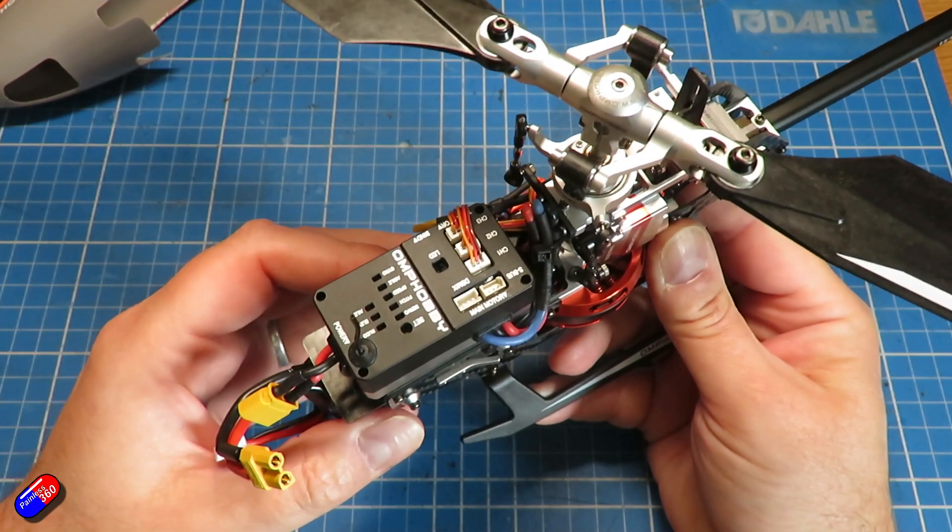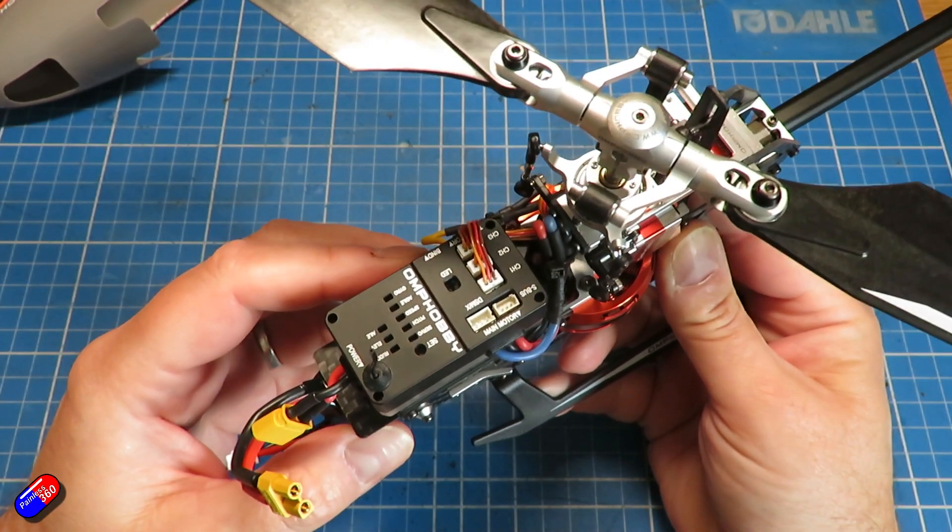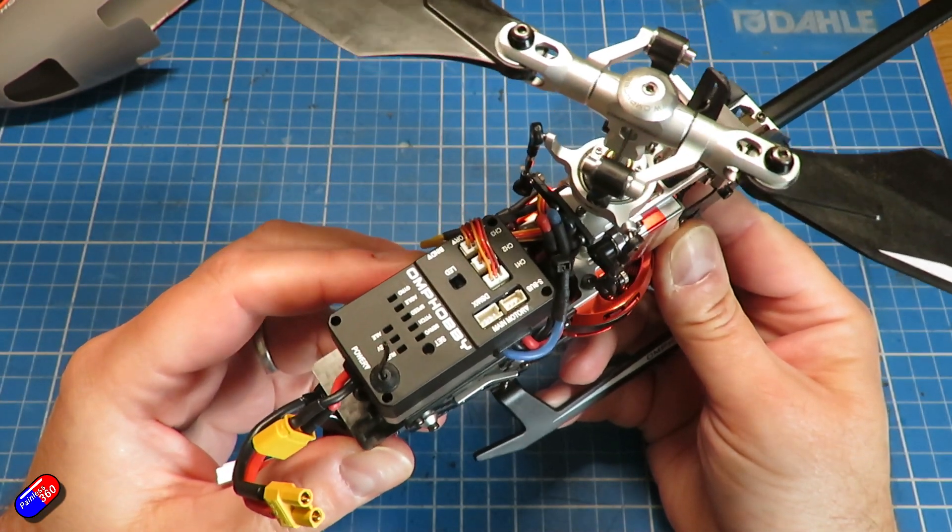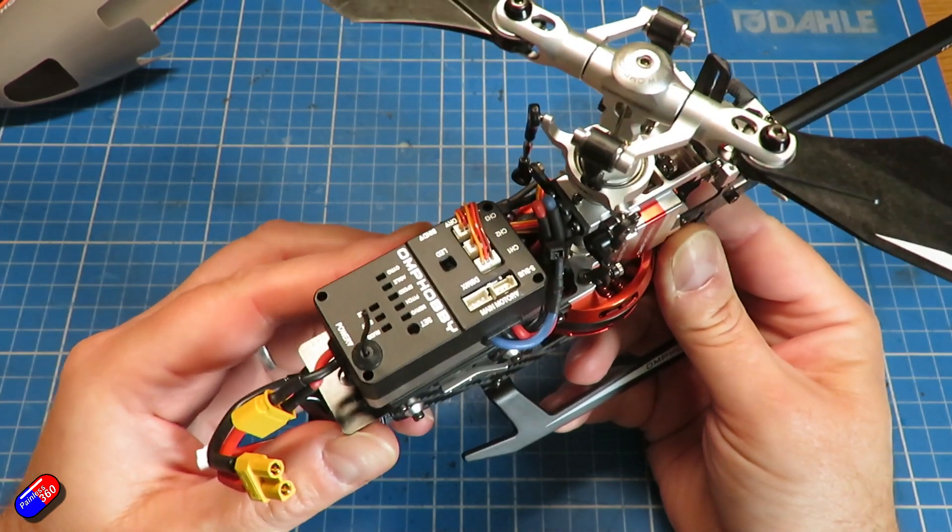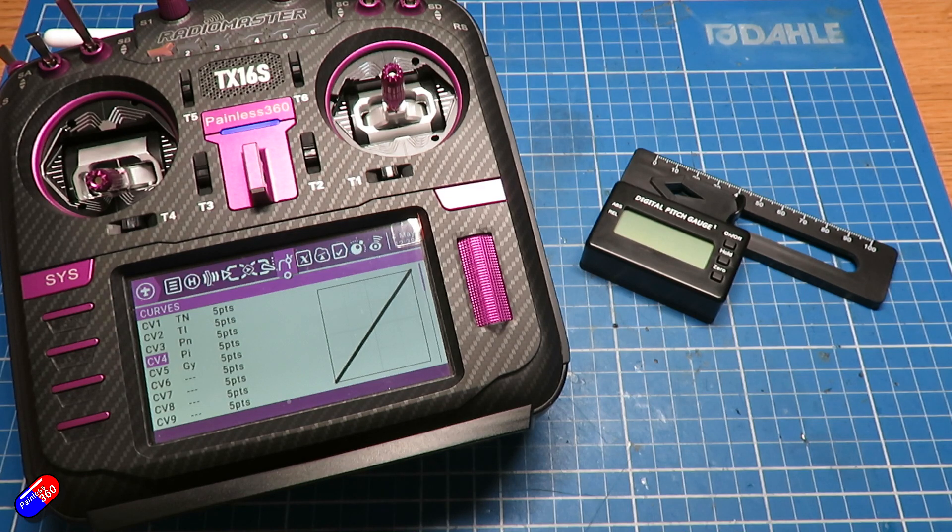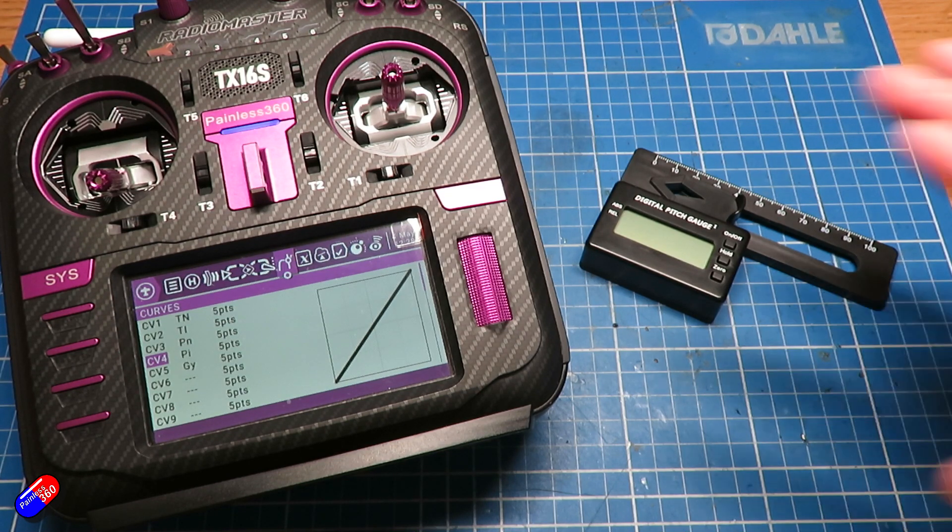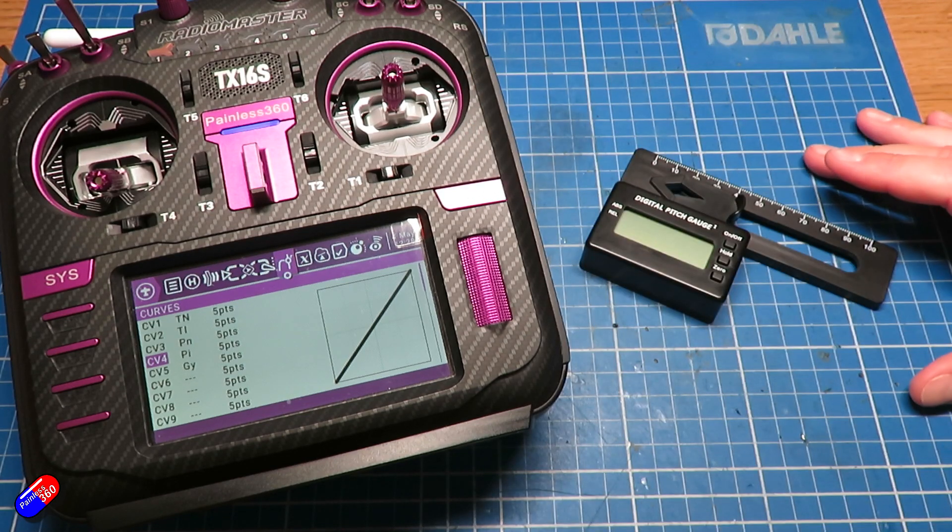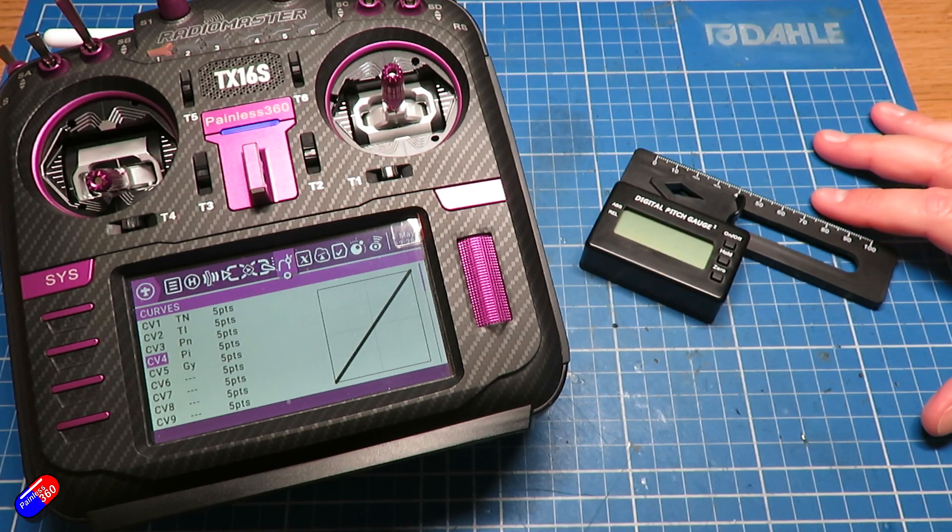With this M2 it comes pretty much ready straight out of the box, and with the linkages if you set them up as per the video then they are set. So hopefully that's interesting and explains, if you're not sure about what idle up, 3D, or normal mode is, and also what pitch and throttle curves are, hopefully that's a little bit clearer.